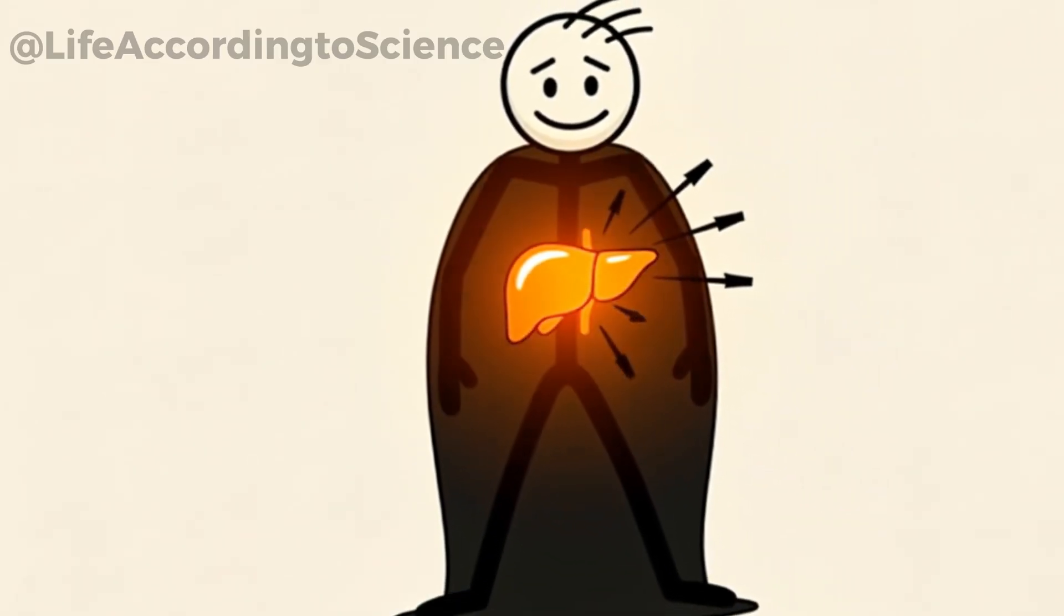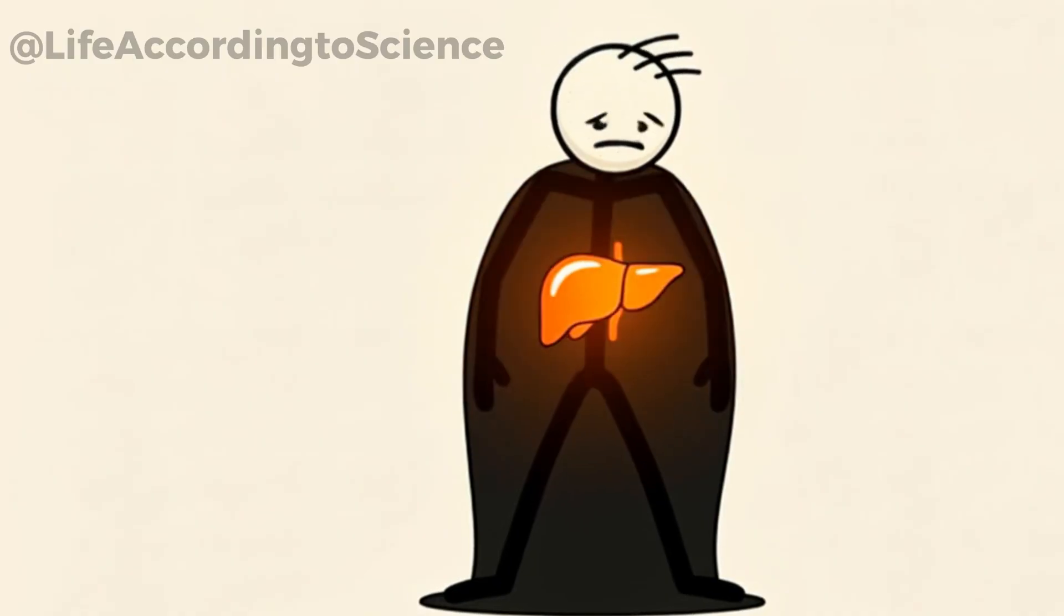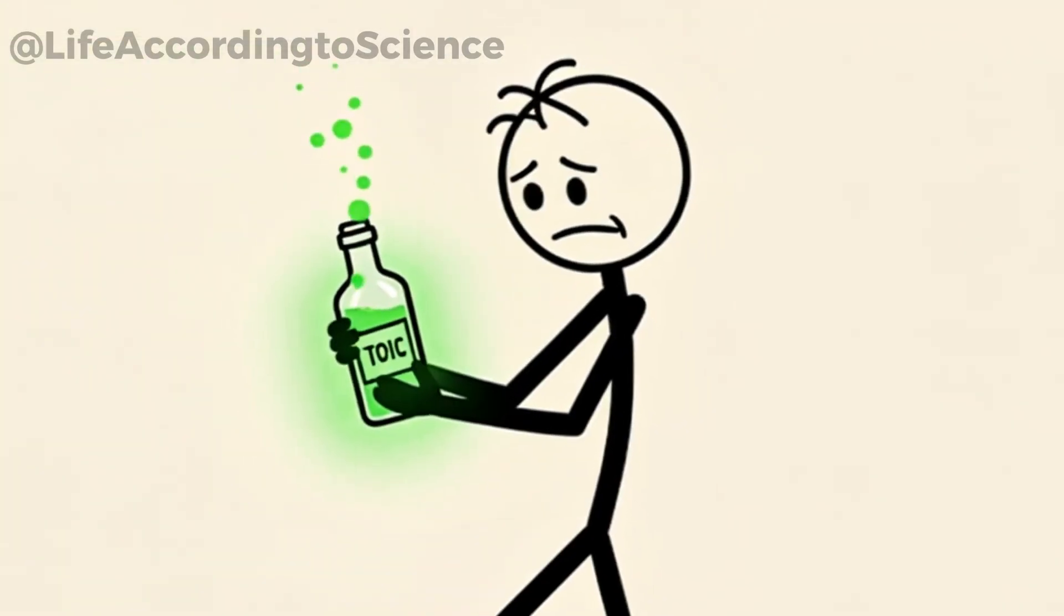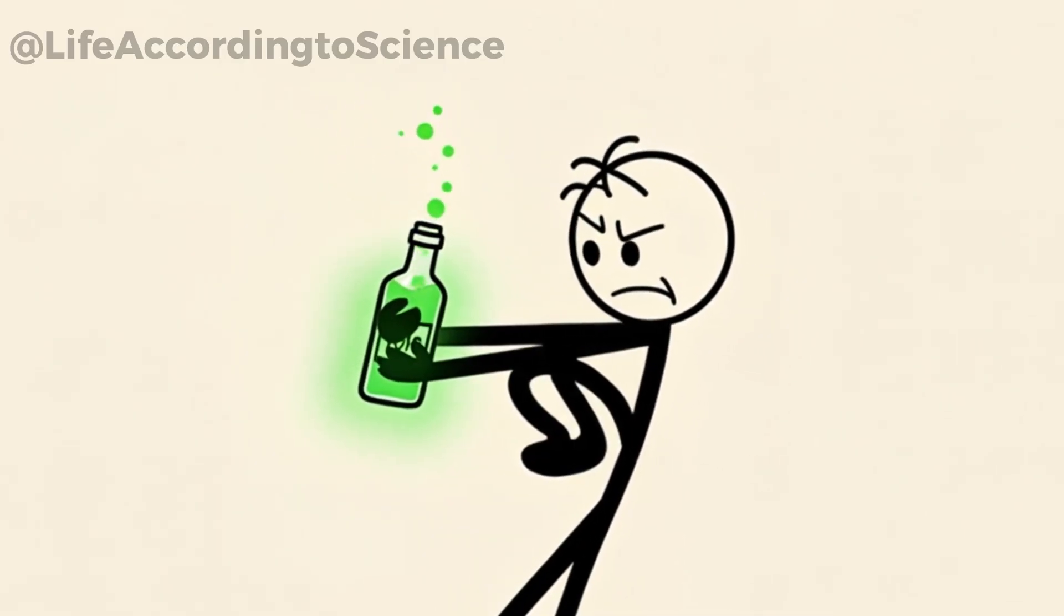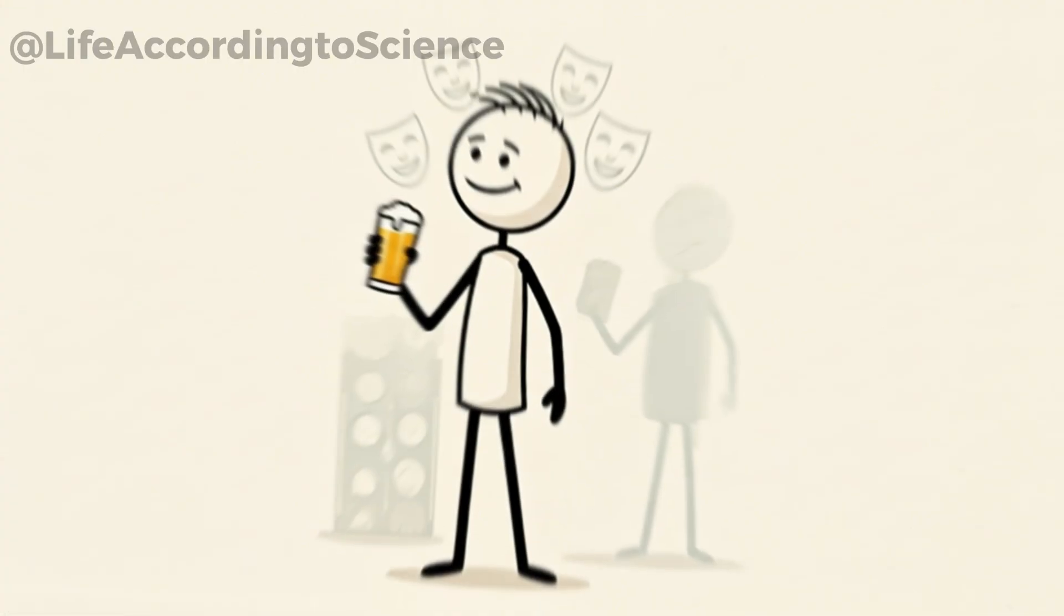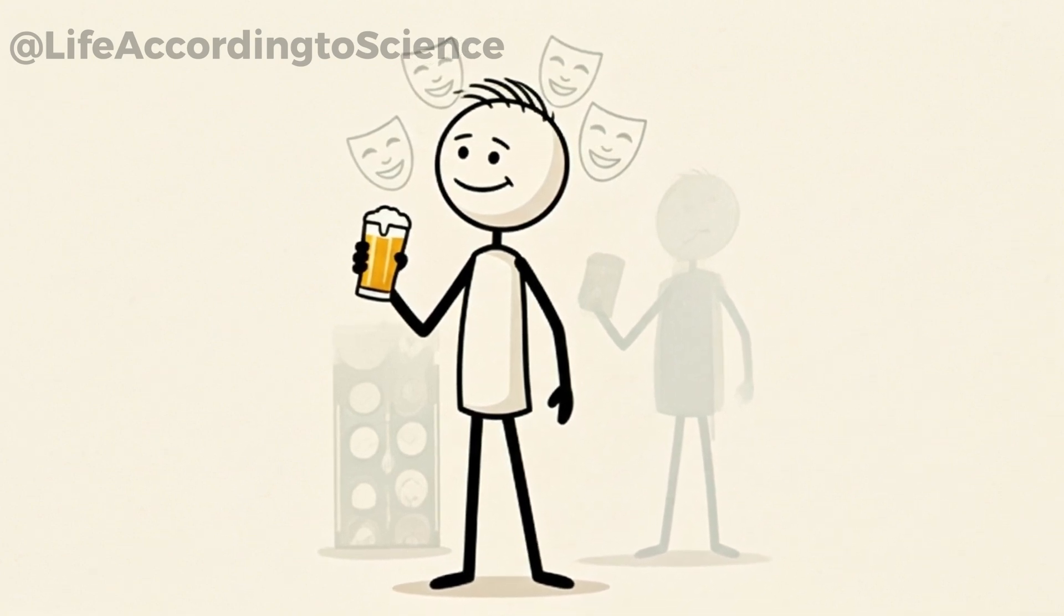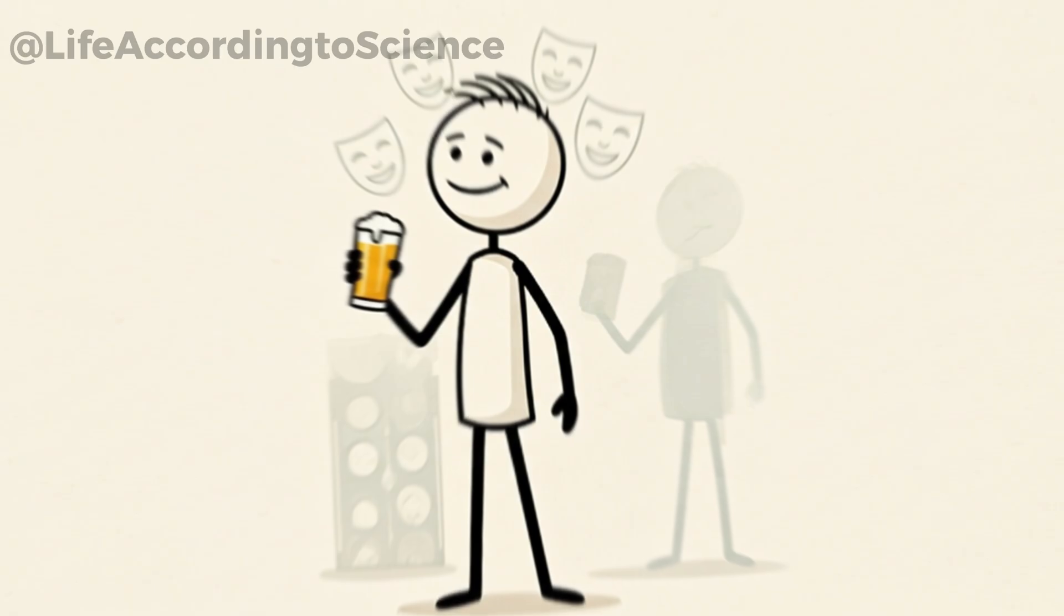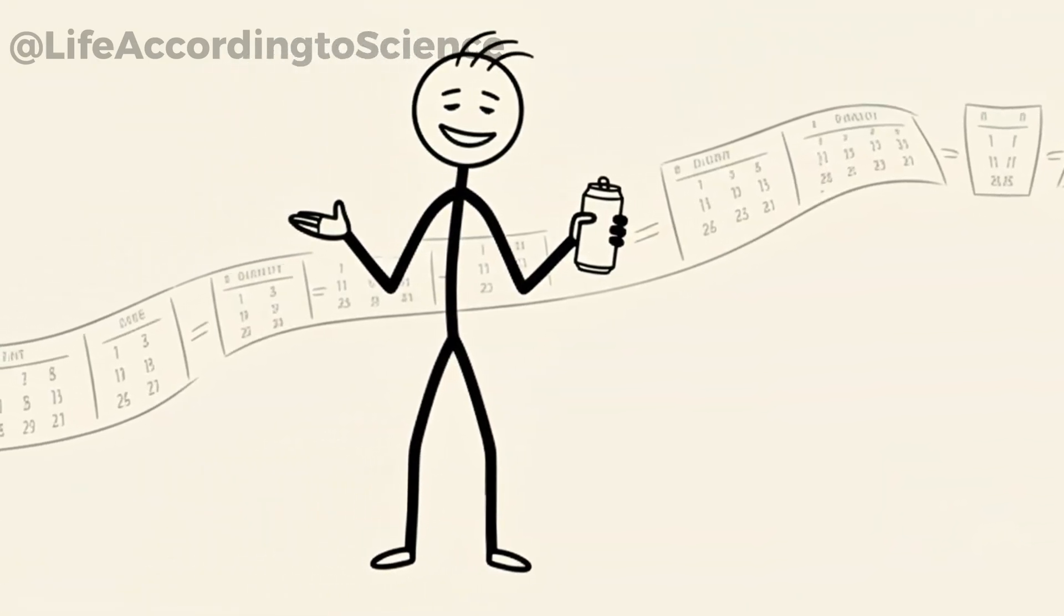The liver immediately kicks into high gear, working to break down ethanol, the active ingredient in alcohol. Your body treats it not as food, but as a toxin that needs urgent processing. For many, that reality is easy to ignore because the effects are subtle at first. This is where the illusion begins. One beer feels harmless, even beneficial to some.